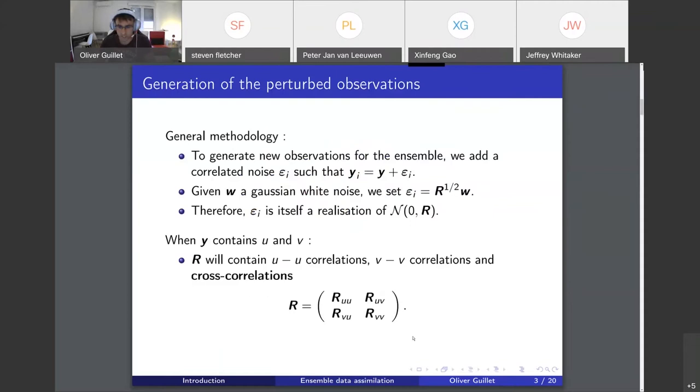The general methodology is to generate new observations for the ensemble. We add correlated noise to each observation, so you take your vector y which is unique and you generate new observations by adding different vectors containing observation noise. Then you get a set of y sub i, which is your different observation for each member.